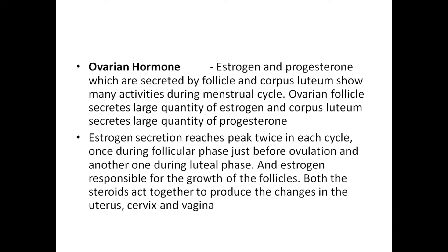Ovarian hormones: estrogen and progesterone secreted by the follicle and corpus luteum show many activities during the menstrual cycle. The ovarian follicle secretes a large quantity of estrogen, and the corpus luteum secretes a large quantity of progesterone. Estrogen secretion reaches peak levels twice in each cycle — during the follicular phase just before ovulation, and again during the luteal phase. Both steroids act together to produce changes in the uterus, cervix, and vagina.